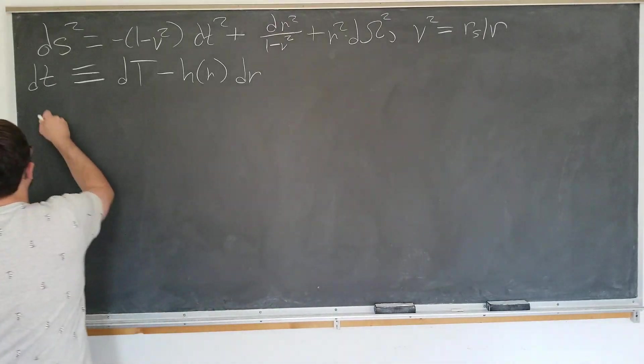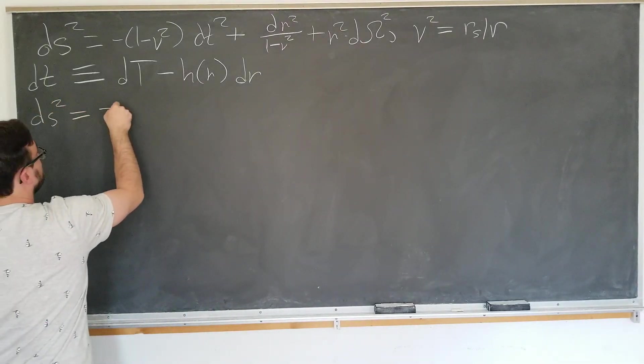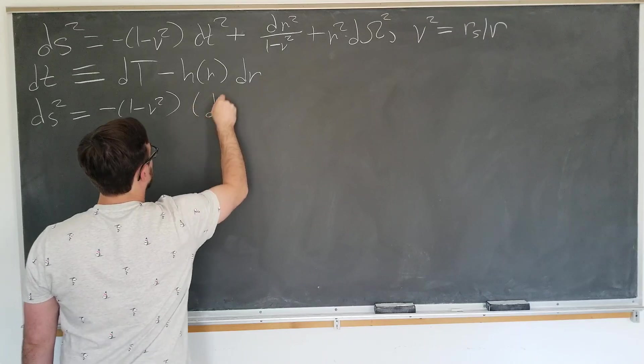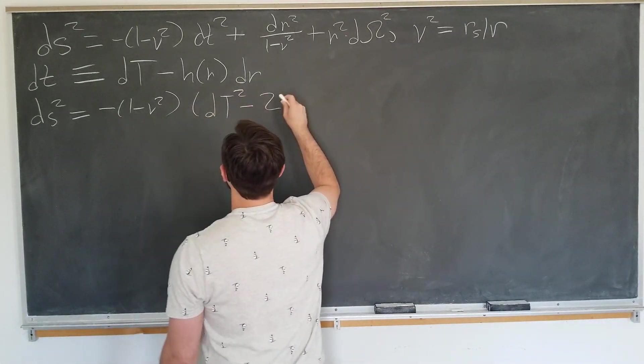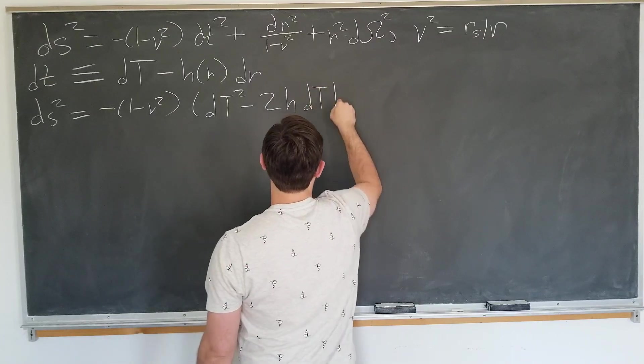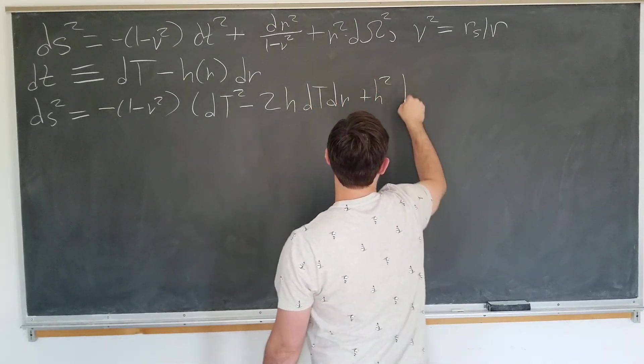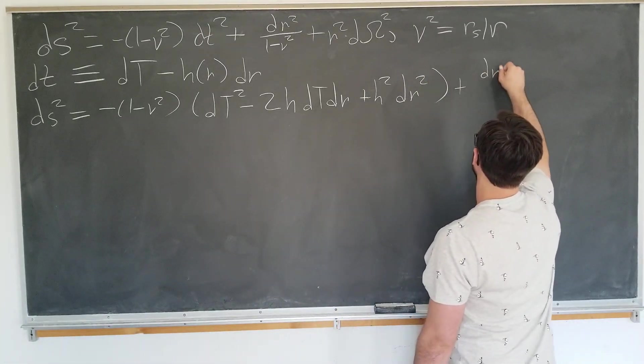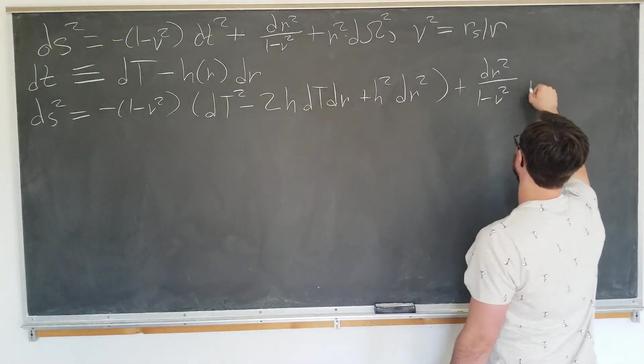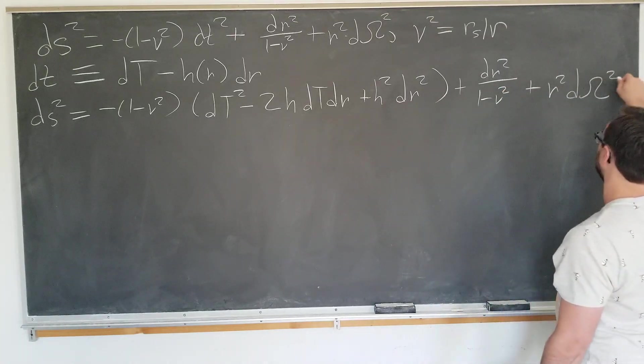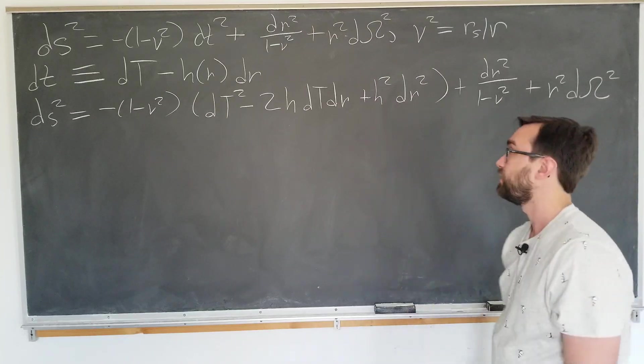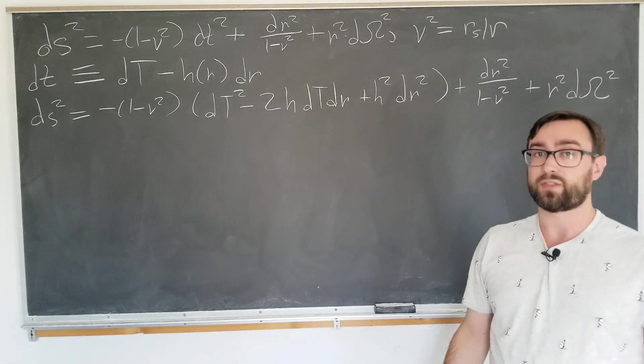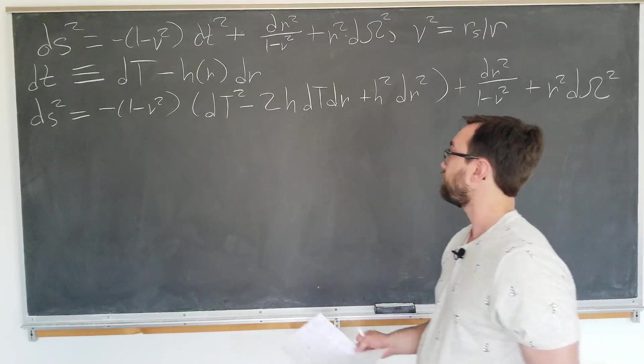So this tells us that ds squared is now equal to minus 1 minus v squared dt squared. That's just going to be dt squared minus 2h dt dr plus h squared dr squared. And the rest of the terms go along for the ride: dr squared over 1 minus v squared plus r squared d omega squared. You'll see in a moment why we defined the v coordinate. It's just for convenience since that's the only combination of r and rs that'll appear in this problem.